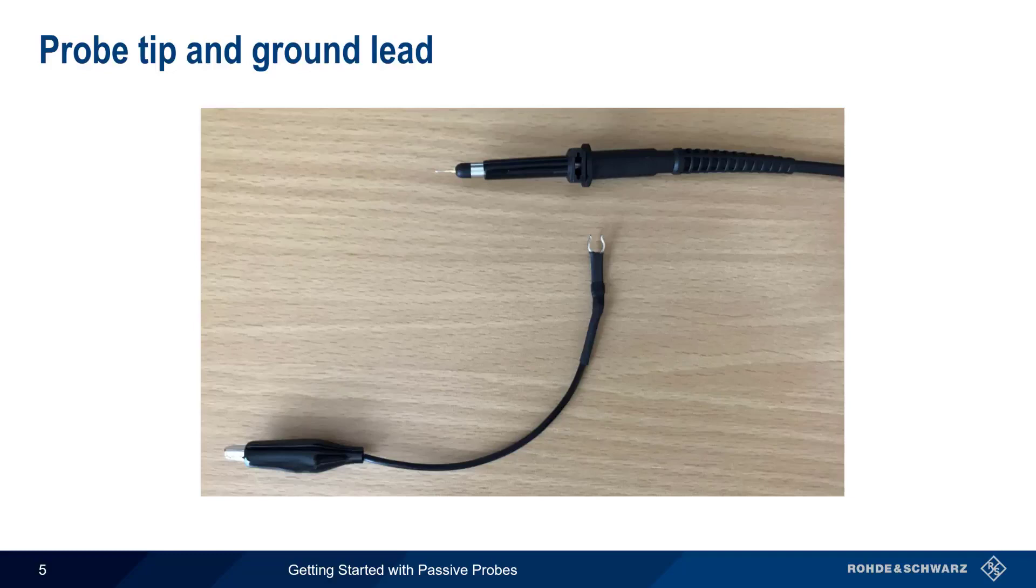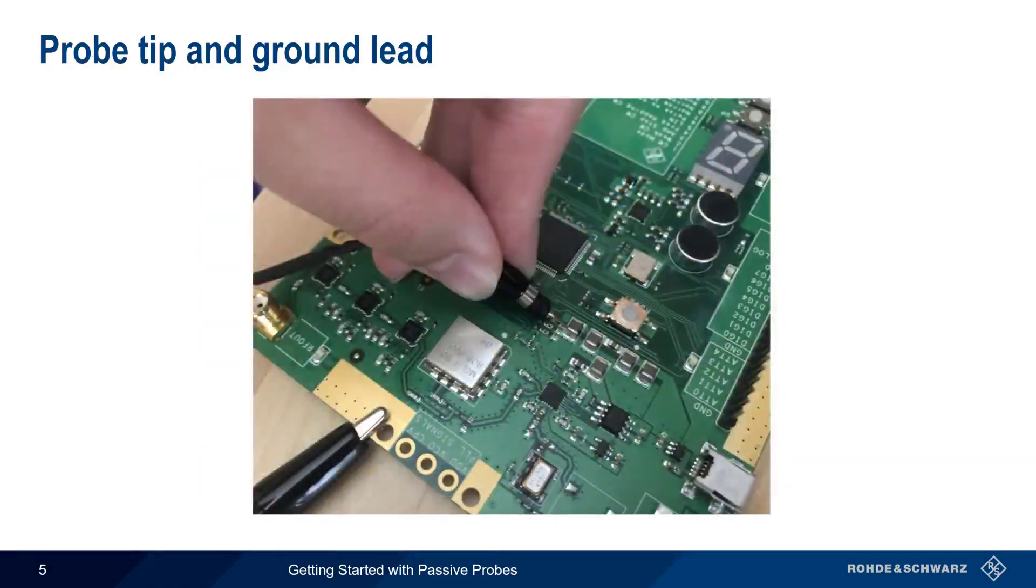Here's what this looks like on an actual probe. The ground lead, which often terminates in an alligator-type clip, is connected by inserting this crescent-shaped piece into the probe body. When using a passive probe, the ground lead is attached to circuit ground, here the flooded part of this board, and the probe tip is placed at the measurement point.